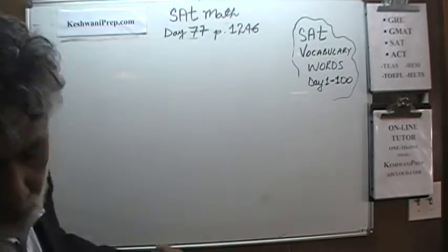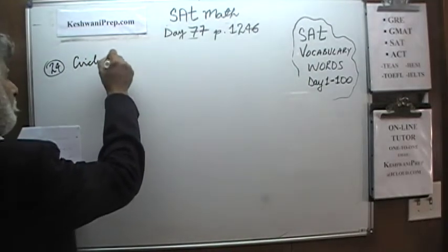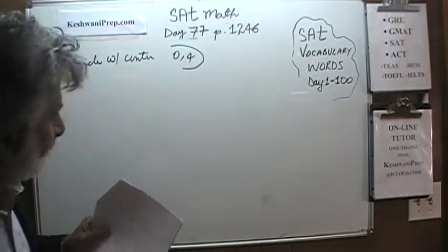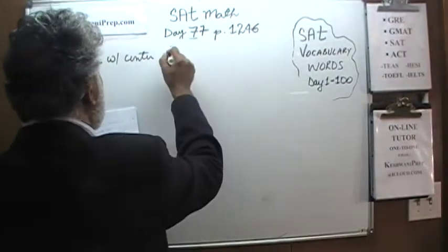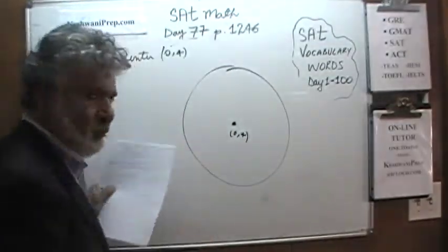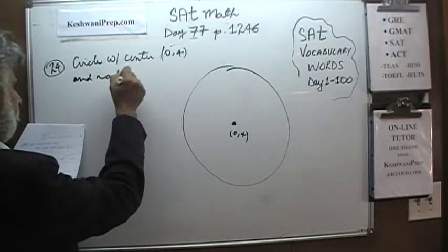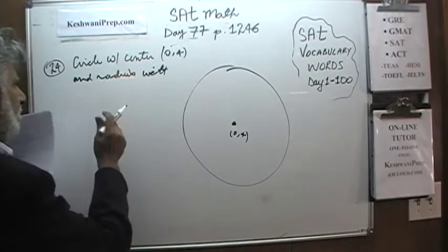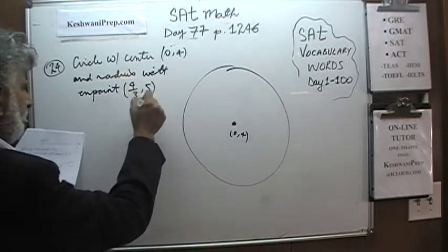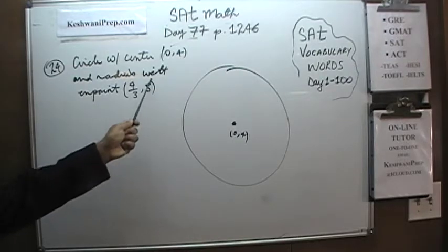The very first problem we see here is number 24. In number 24, we are dealing with a circle and we are told that it has a center of (0, 4). We also know the radius, with the endpoint at (4/3, 5). So we have a circle with center (0, 4) and a radius endpoint at (4/3, 5).